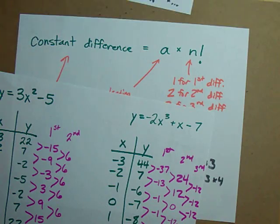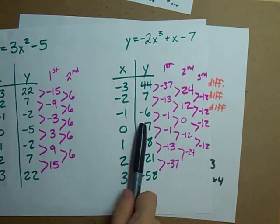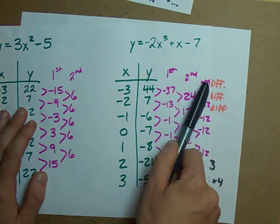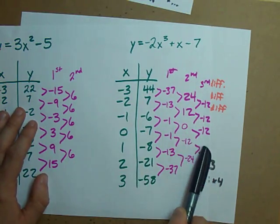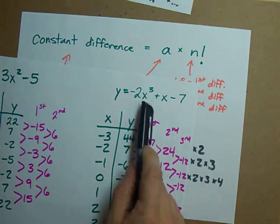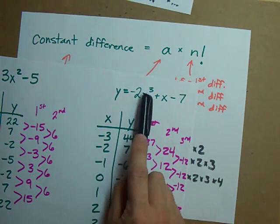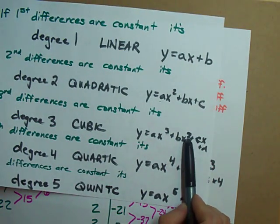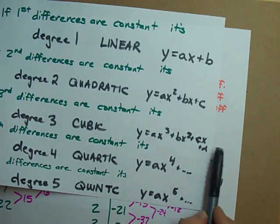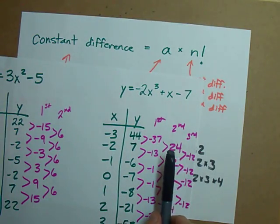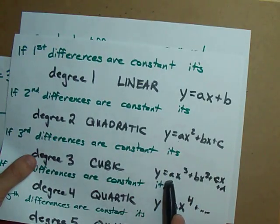Most often what you'll be asked to do is to calculate the differences in a table, find out which one's constant. That's third differences here, therefore it's a cubic equation. It'll be ax cubed plus some number x squared plus some number times x plus some number. And what you can also determine is that that first coefficient, that a...